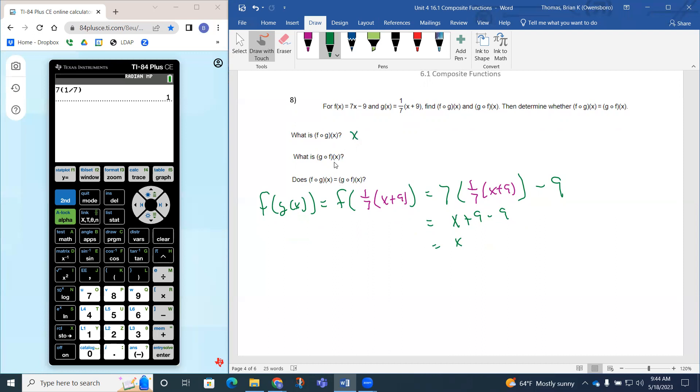The next thing is we have g of f of x. Notice this time, f of x is inside the g function. And f of x, which is 7x plus 9, is going to become the input. It's going to replace the x in the g function.